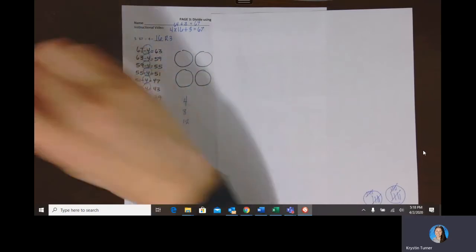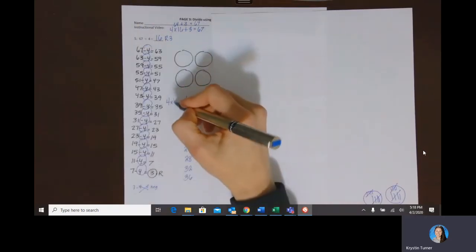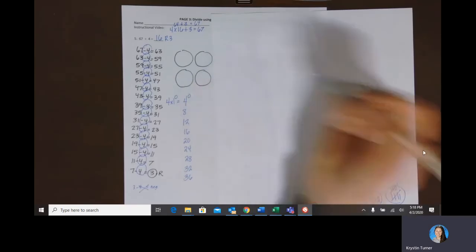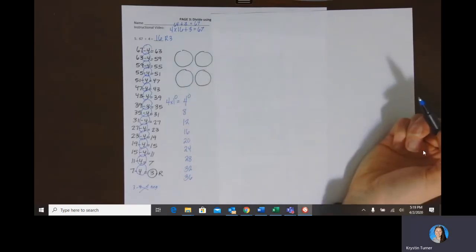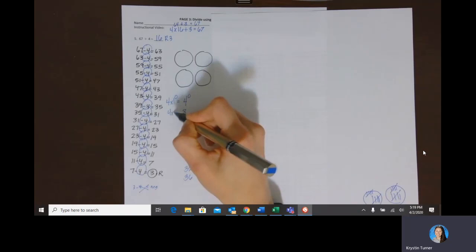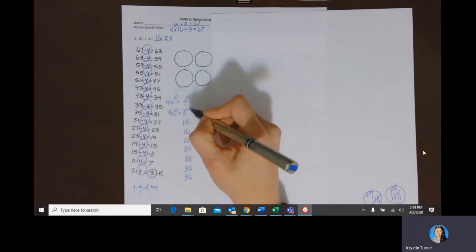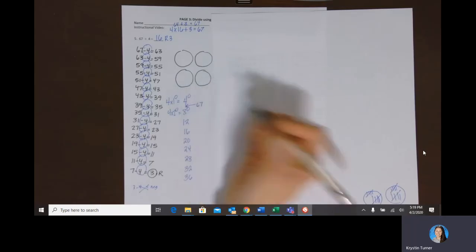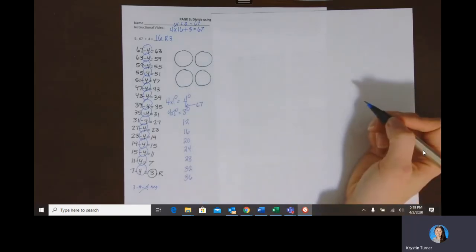And then if this is four times one, then four times 10 would be 40, right? And if this is four times two, then four times 20 would be 80. So 67 would be right in the middle of that 40 and 80.